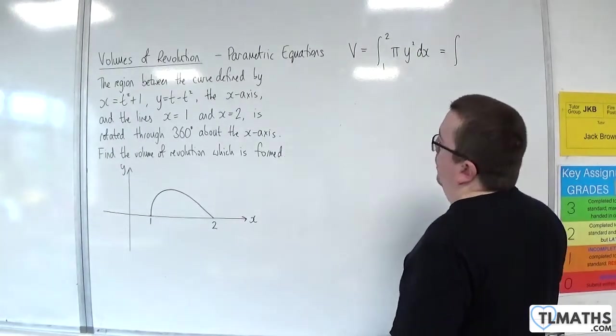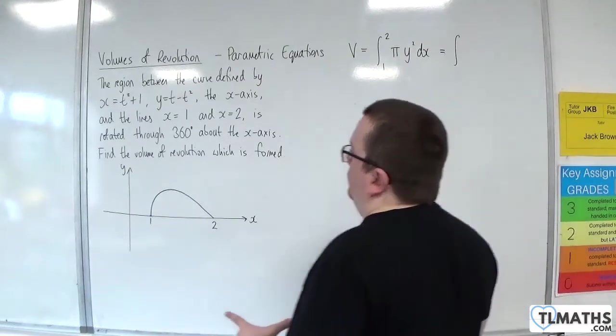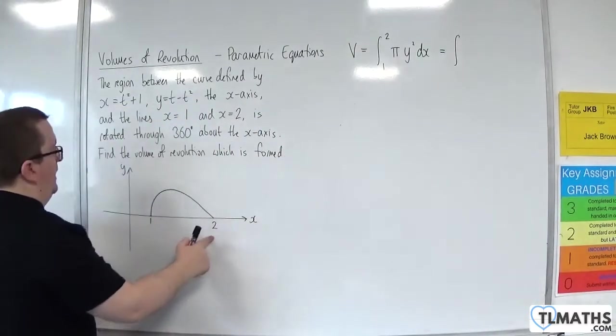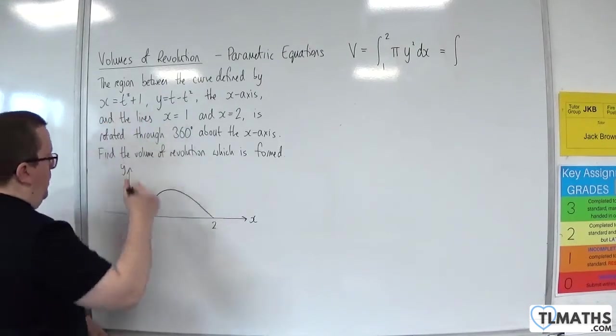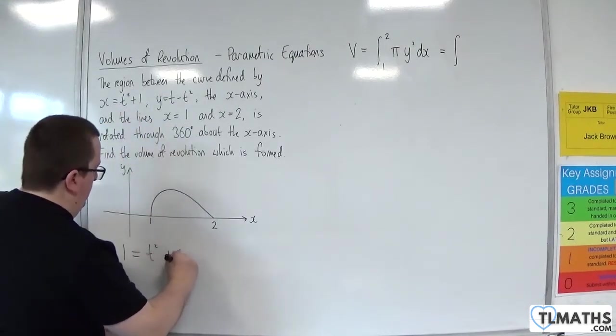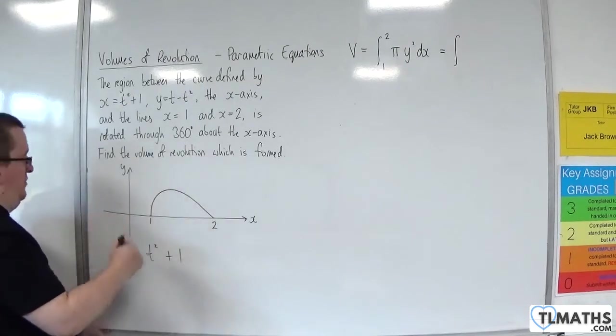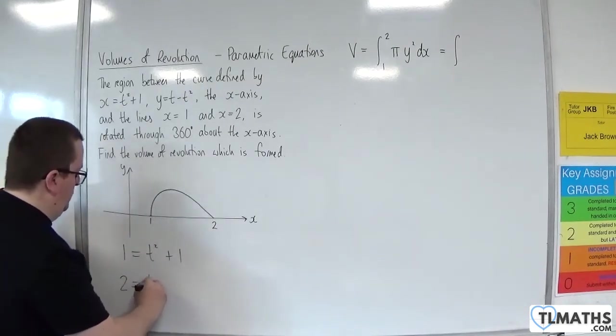So this is going to be the integral of, now we need to get the limits. When x equals 1 and x equals 2, so we're going to put 1 equal to t squared plus 1, because that's x. And we're also going to put 2 equal to t squared plus 1.